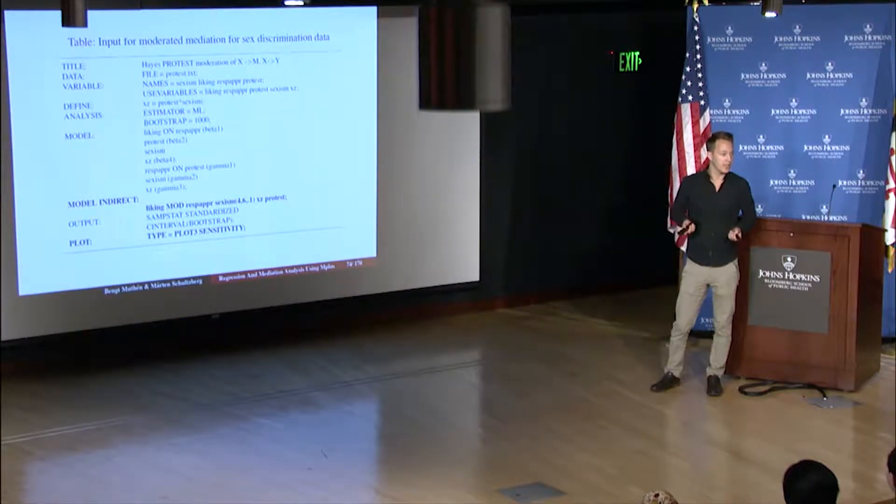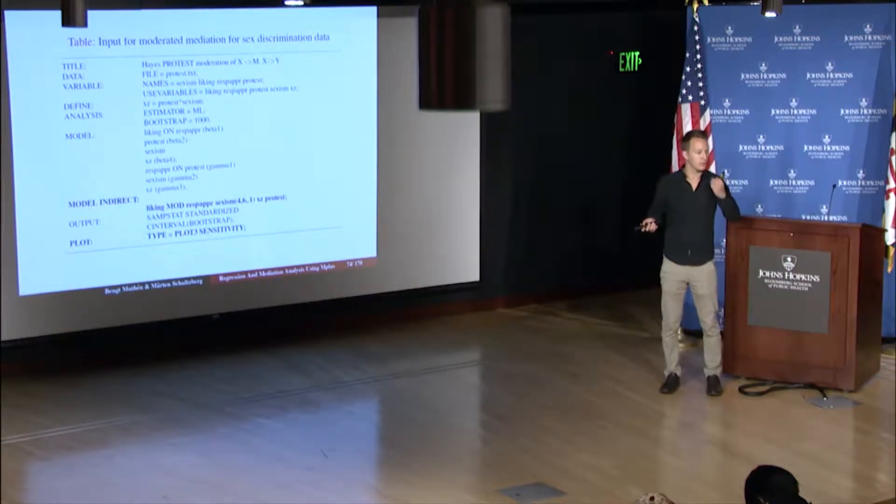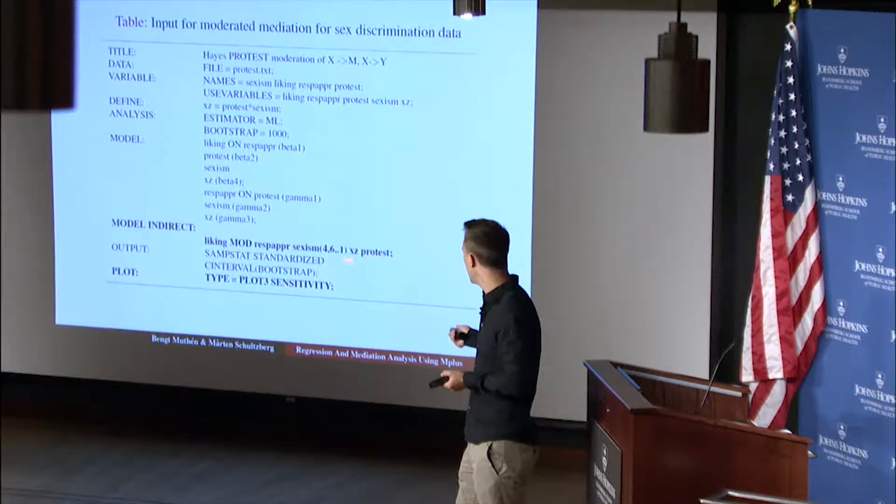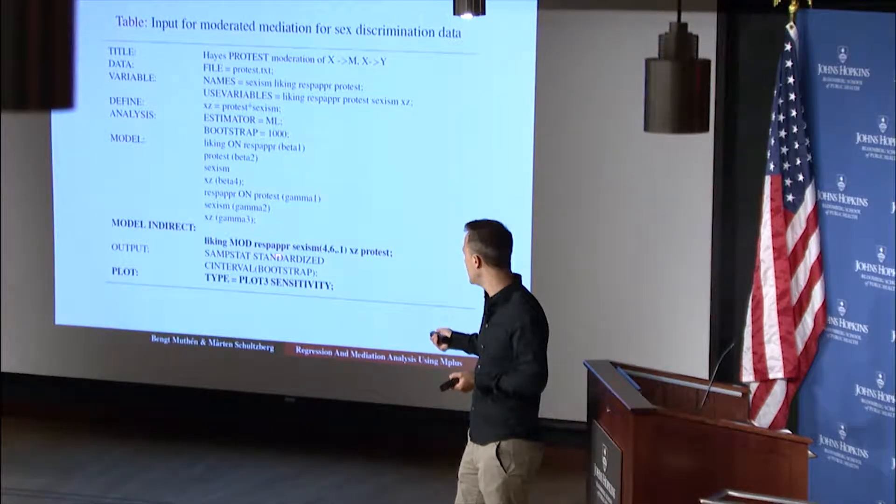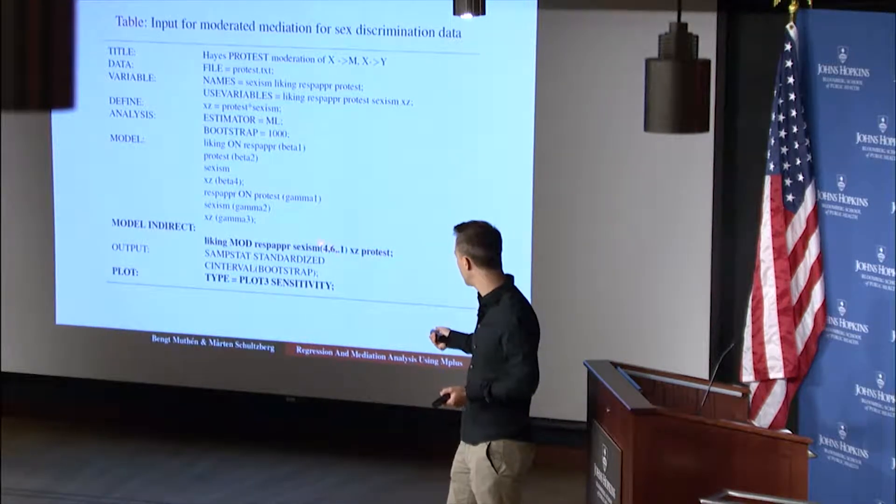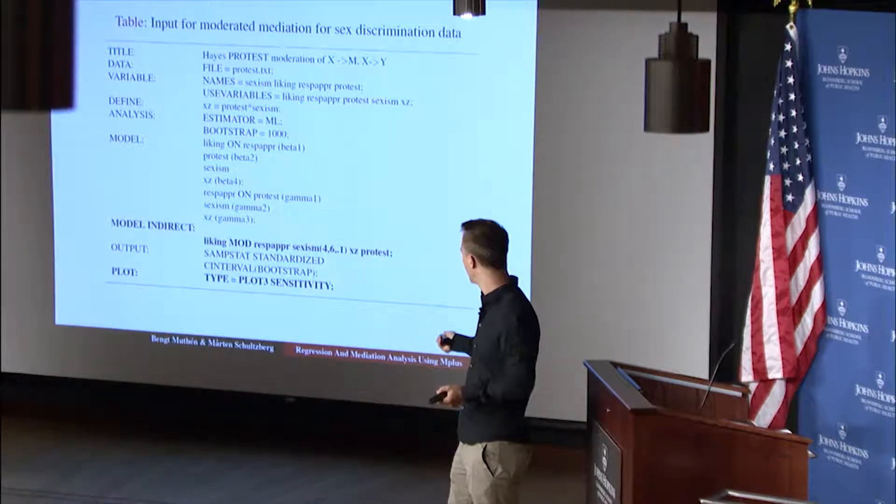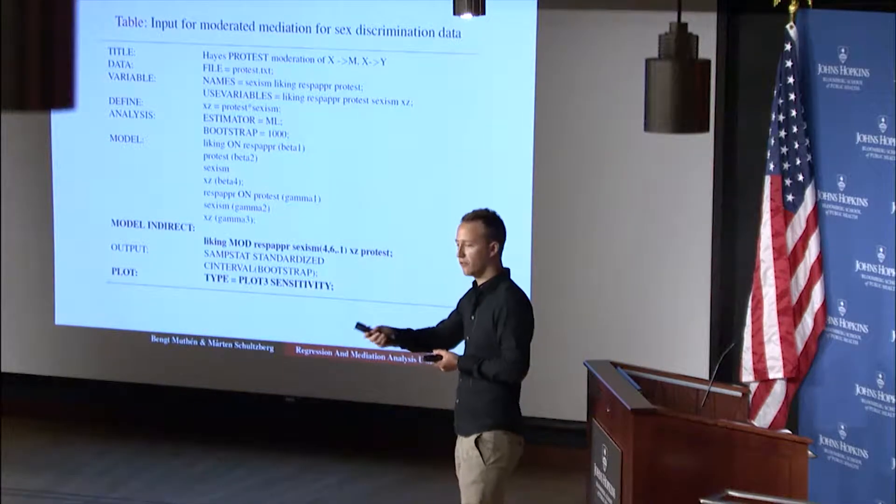All right. So how did we get this output? Well, you kind of know by now we created the interaction variable in a defined statement. We used the bootstrap thousand samples in this case and the bootstrap confidence interval here as we kind of default now when we use the maximum likelihood estimator for mediation models. And then in the model indirect command, we specified the outcome and then mod option for moderated mediation, the mediator, the moderator, and for which values we want to see the plot, the plot we just saw. So this corresponds to that. And then the interaction variable and finally protest, which is the exposure. No values in parenthesis because it's a binary treatment or binary exposure. So we will see it for the default shift zero to one.